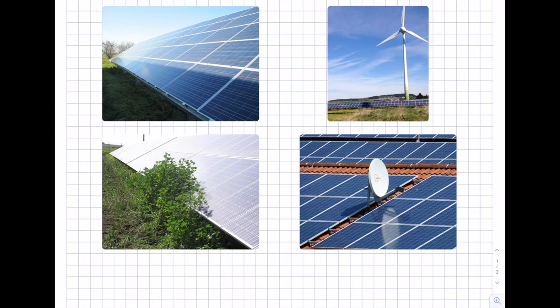Now we want to talk about the effects of shading and the reduction of yield production if parts of a module, or if the cells of a PV module, are covered due to obstacles close to the modules. What you can see here in these four examples are typical situations that cause shadows. First, in ground-mounted systems, you see shadows from the front row when the elevation angle of the sun is rather small, creating a shadow on the back row of the modules.